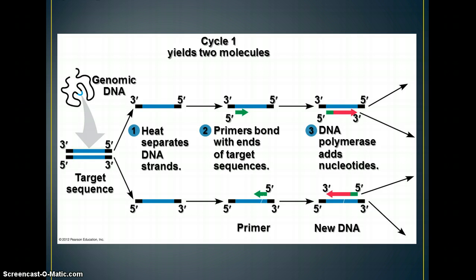So here's the process that shows one cycle of PCR. You're going to take this target sequence of DNA that you're looking at and heat it so that it separates the two DNA strands from each other. And then you put some primers in, and they're going to bond with the ends of this target sequence. And then you've got DNA polymerase enzyme. It will add the nucleotides in place. And so you end up with primer and new DNA that's been formed.